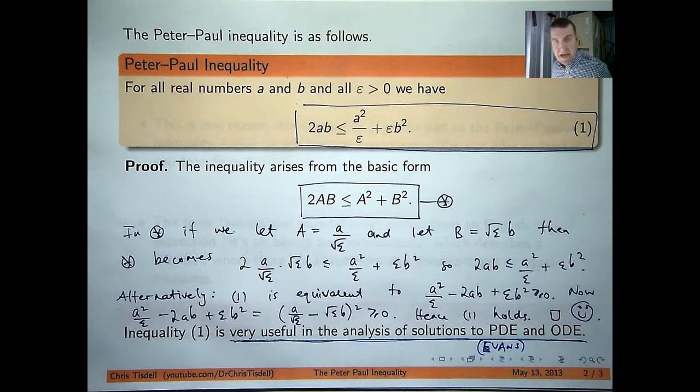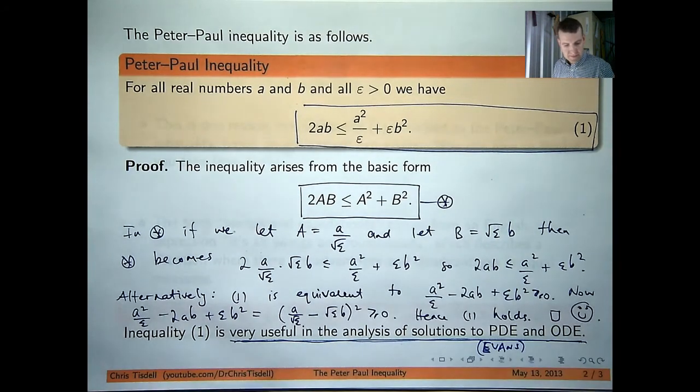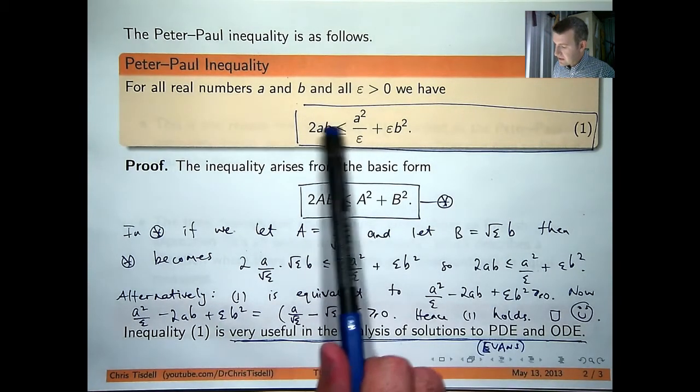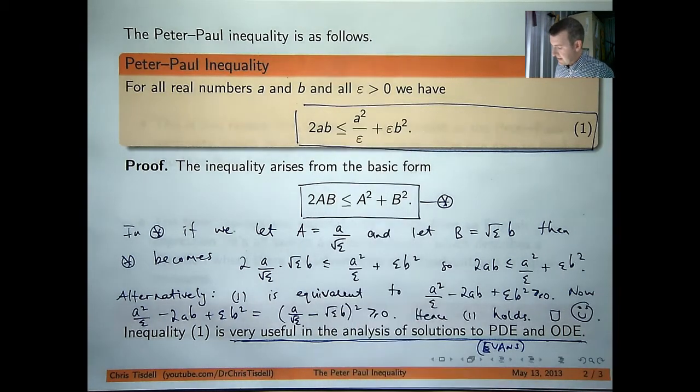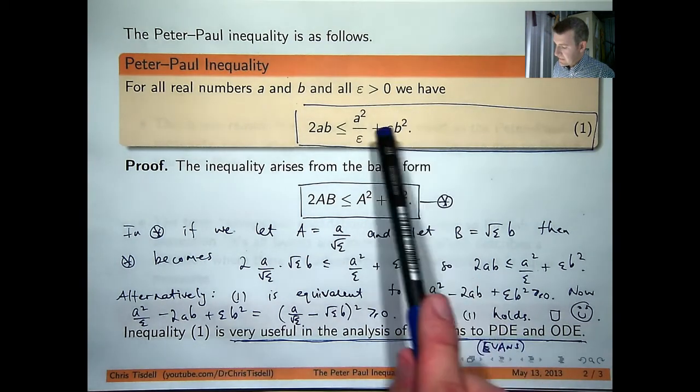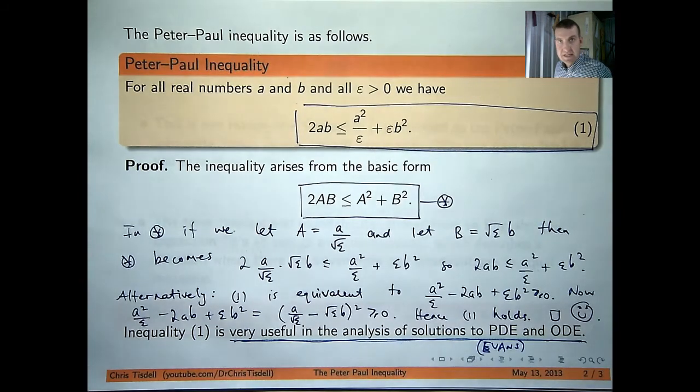So that's how the Peter-Paul inequality can arise. Now, in practice, you're estimating the product of 2AB in terms of these things, and in what Evans has done, and what myself and my PhD student have done, is choose epsilon to be some convenient value for the calculations involved. Now, when the research is published, the joint research that myself and my PhD student are doing, I'll put a link to the research paper, so you can see exactly what we've done with that particular Peter-Paul inequality.